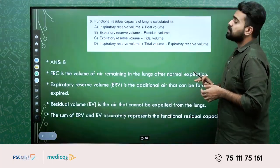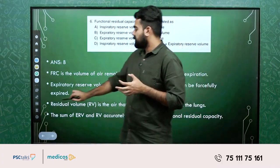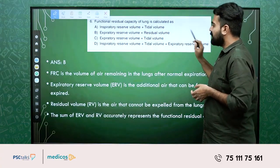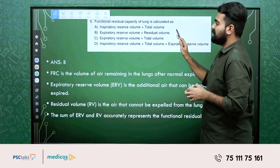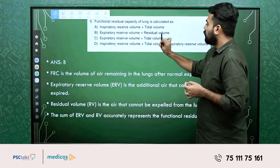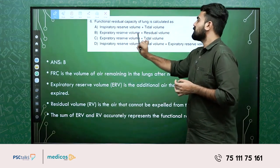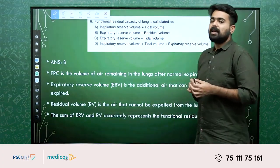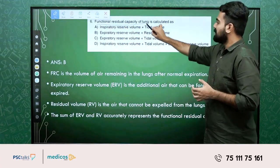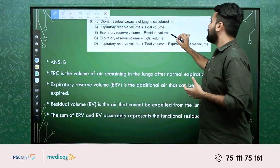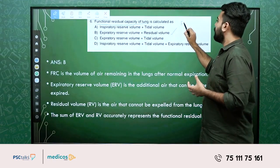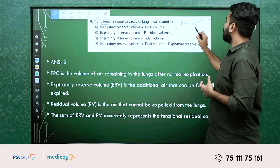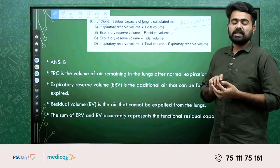So we have a set of questions from physiology. The first question asks about functional residual capacity. Option B is the right answer — that is the functional residual capacity. Functional residual capacity is equal to expiratory reserve volume (ERV) plus residual volume (RV). So FRC = ERV + RV. That is the formula.